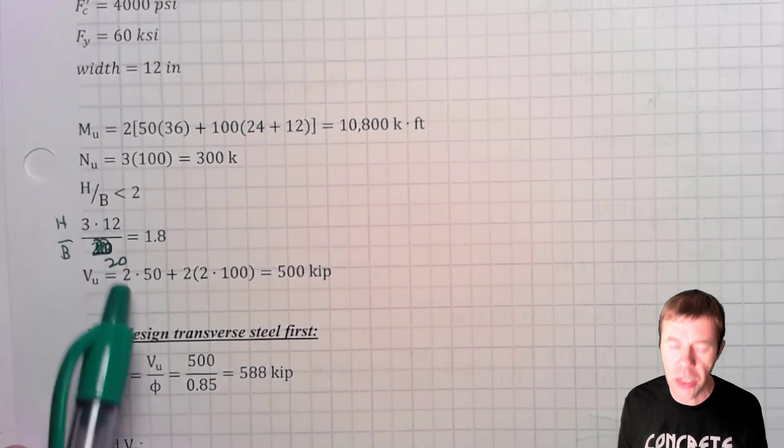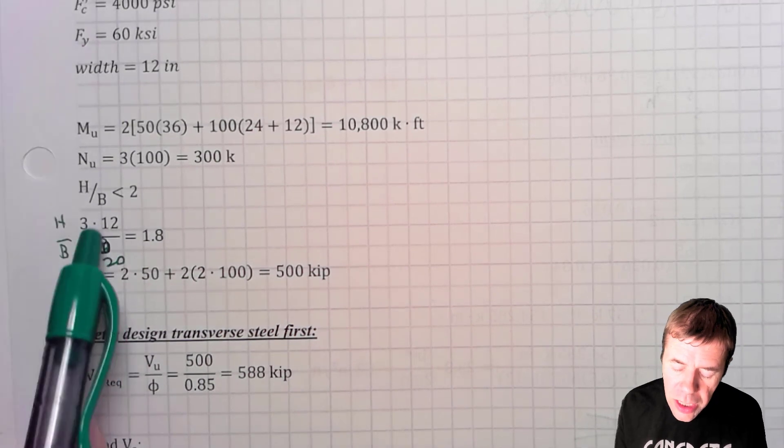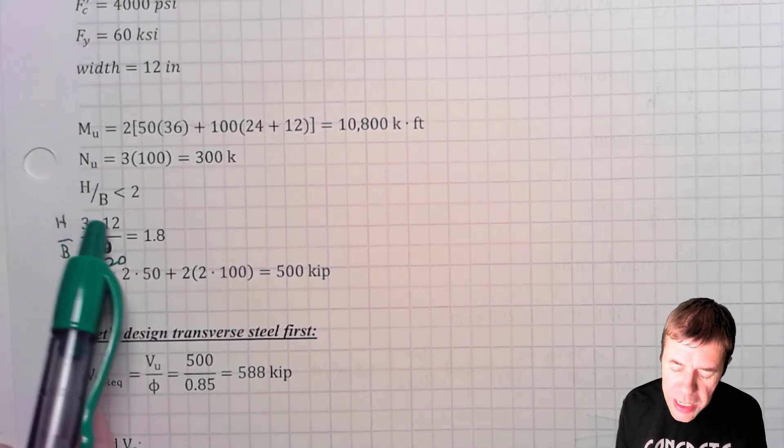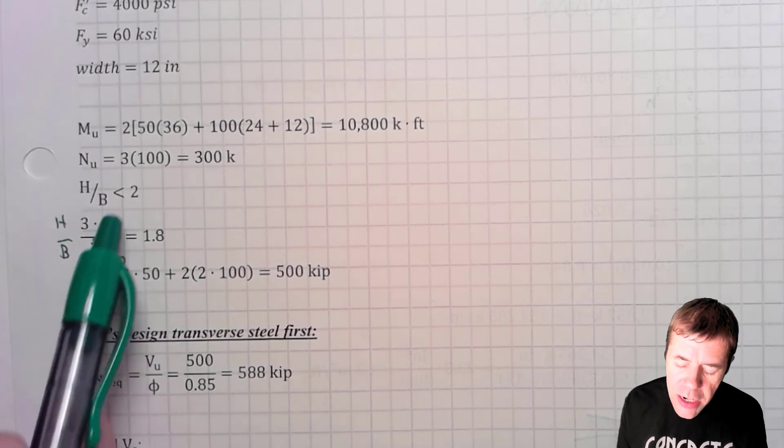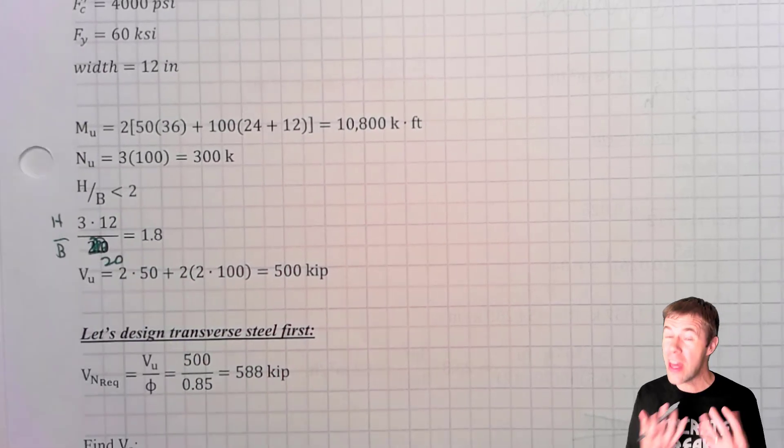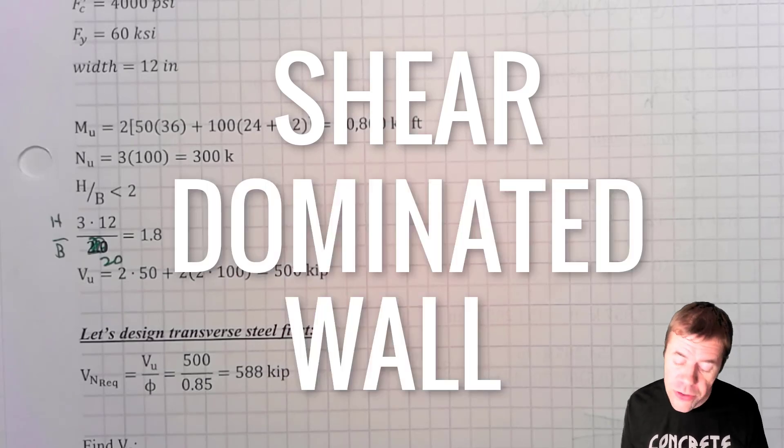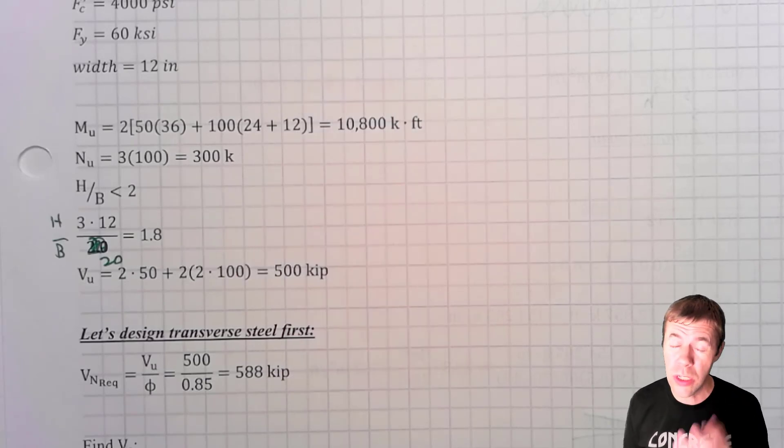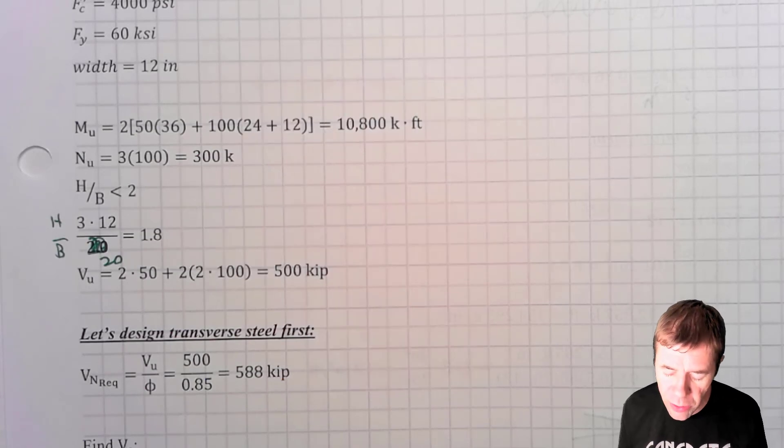Now I'm going to do one calculation here. This is not that useful, but I calculate this value H over B, the total height of the wall over the base of the wall. And if that number is less than two, that usually means it is a shear dominated wall. If it's greater than two, it usually means it is a moment dominated wall. It just helps me get a better understanding of what I'm doing here.